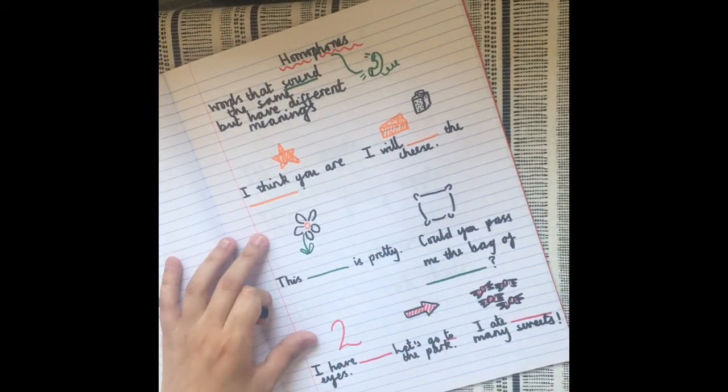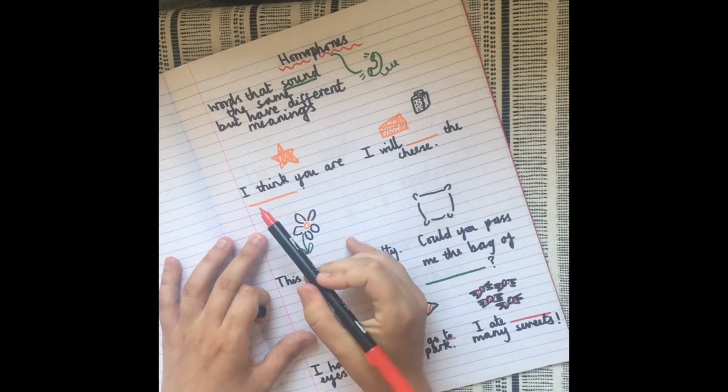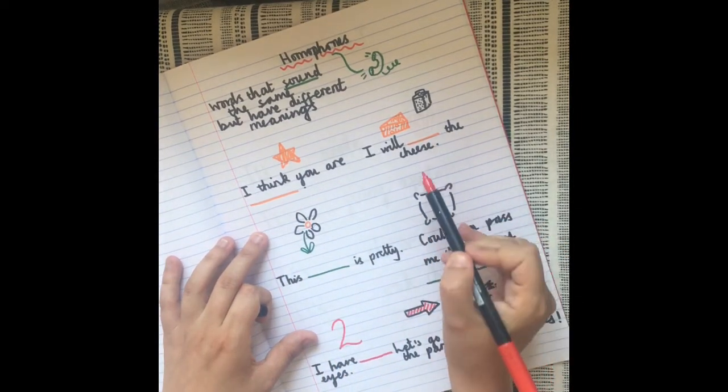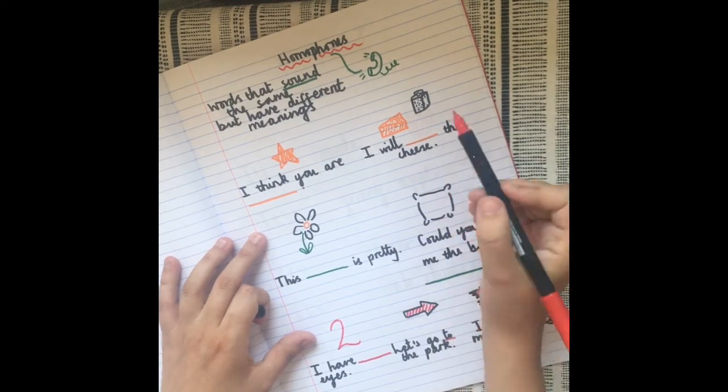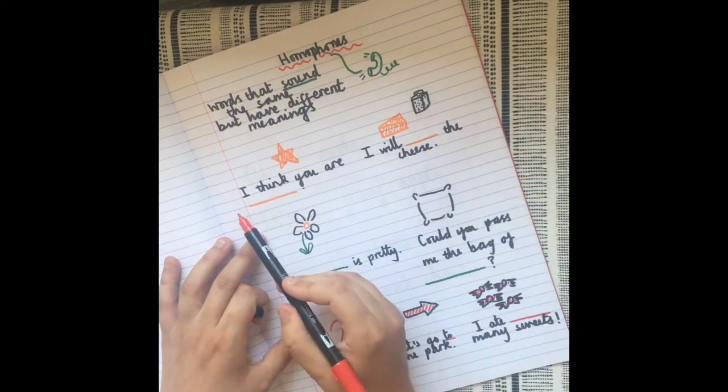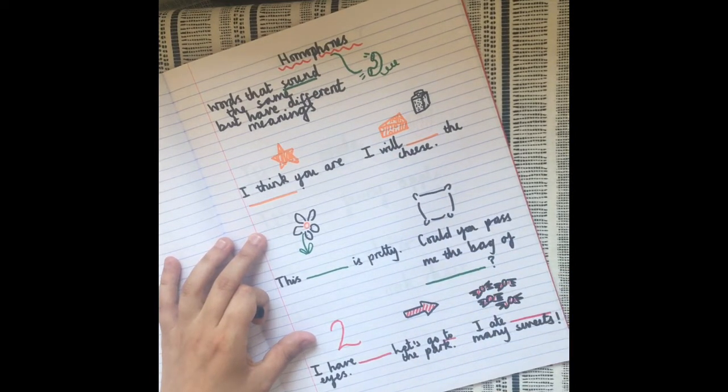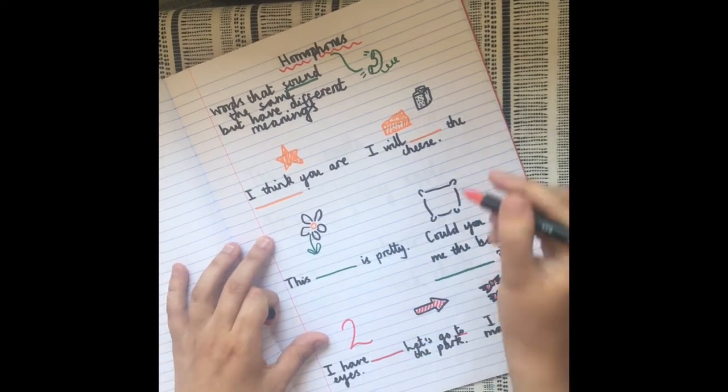Okay, so I've got two sentences here with a word missing. I've got 'I think you are' and 'I will the cheese.' So the word is going to be great. I think you are great. I will grate the cheese. So there are two ways of spelling great.